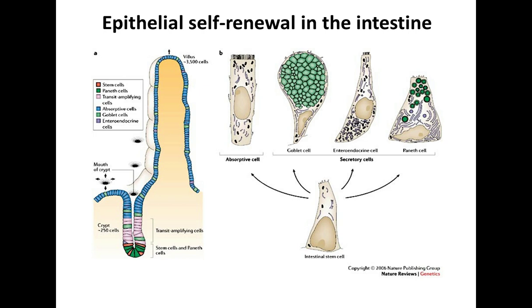Over many decades, people wondered where the stem cells are. When I was a PhD student, no one knew the exact location of stem cells. But by around 2007 and 2008, we got to know the real identity of the stem cell. Stem cells are located in the crypt structure at the very base. We now know that this adult stem cell can self-renew and differentiate into four cell types: absorptive enterocytes, goblet cells, enteroendocrine cells, and Paneth cells.